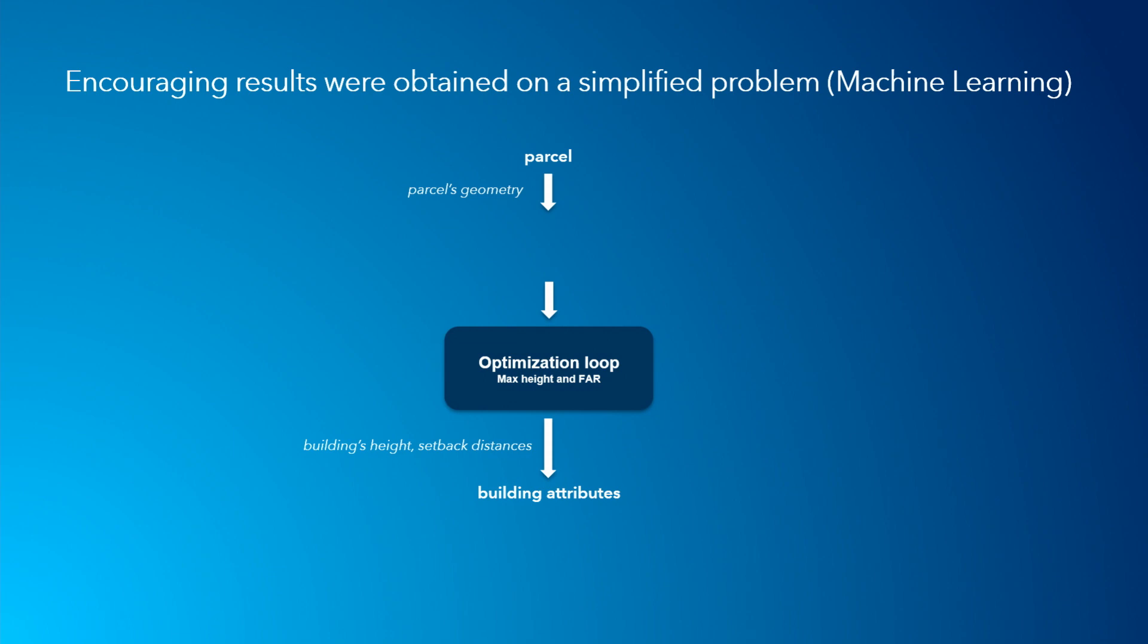So this is the main optimization loop. On top of that, I'm considering some zoning constraints like minimum setback distances, maximum building height, and maximum FAR, so we have here our whole problem.